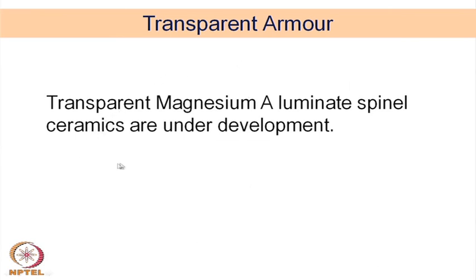A very recent development is transparent armor using magnesium aluminate spinel ceramics. Earlier armor materials are basically opaque, but sometimes transparent ceramics are needed to protect vehicle windows on battlefield vehicles, requiring both optical transparency and energy dissipation properties. With this, we come to the end of this lecture on structural ceramics and the mechanical behavior of materials. The next class will cover bioceramics — ceramic materials used in biotechnology.